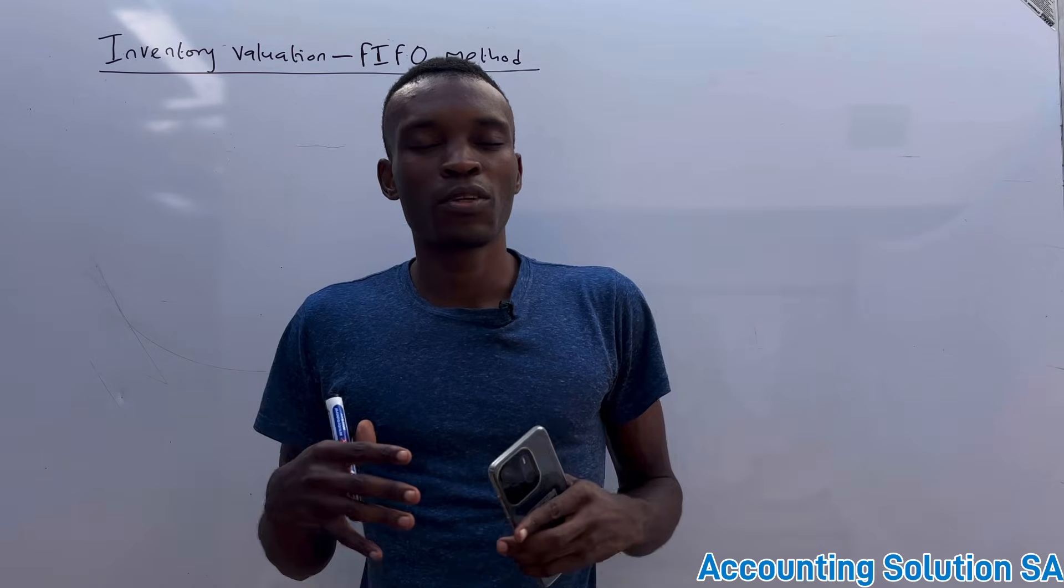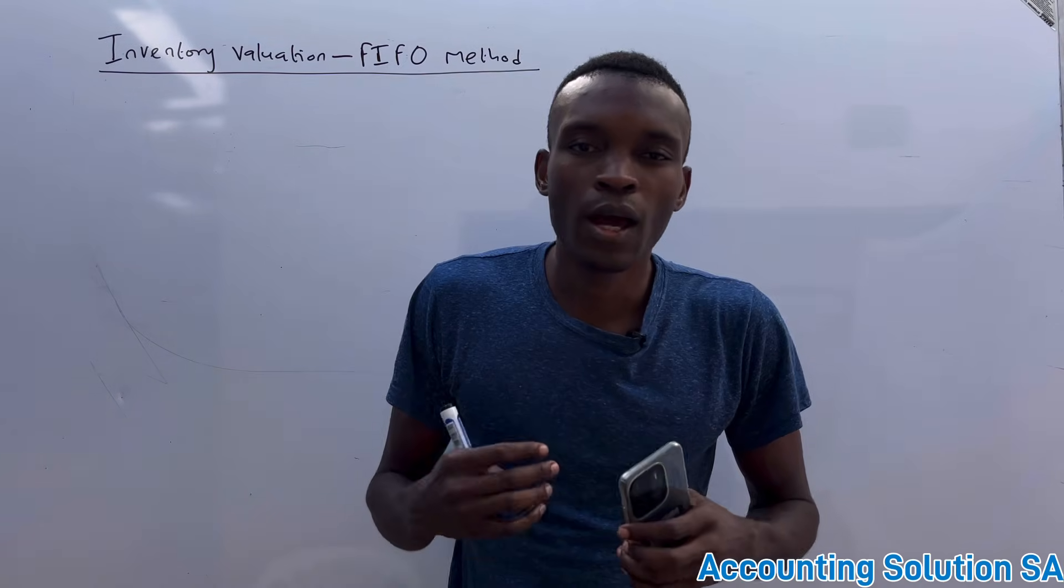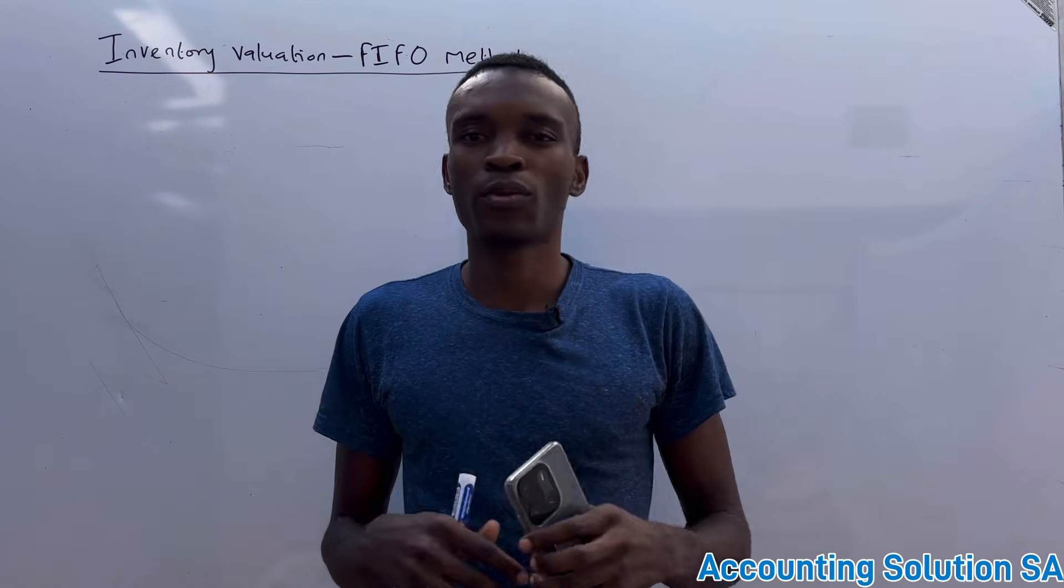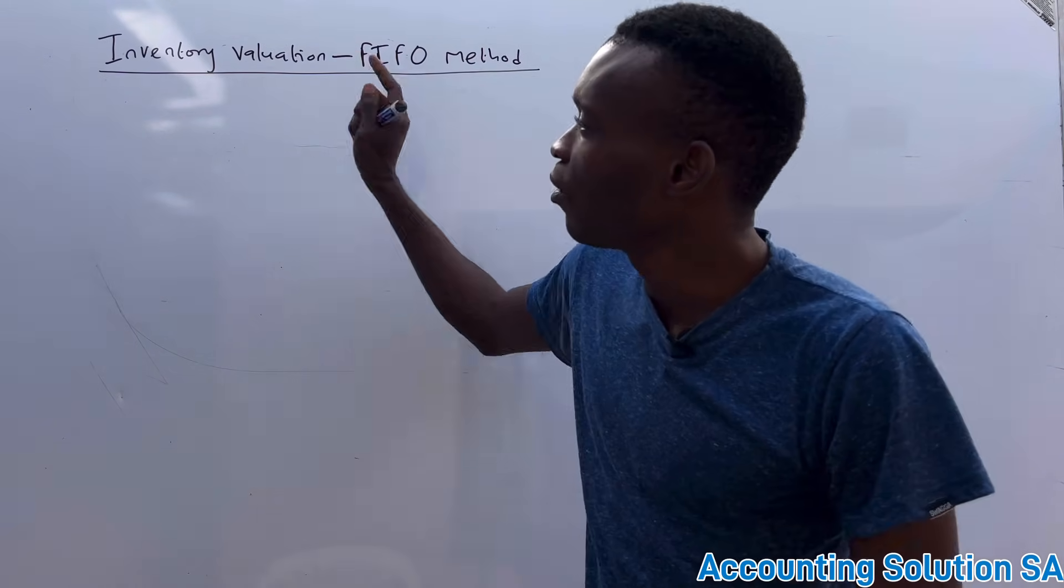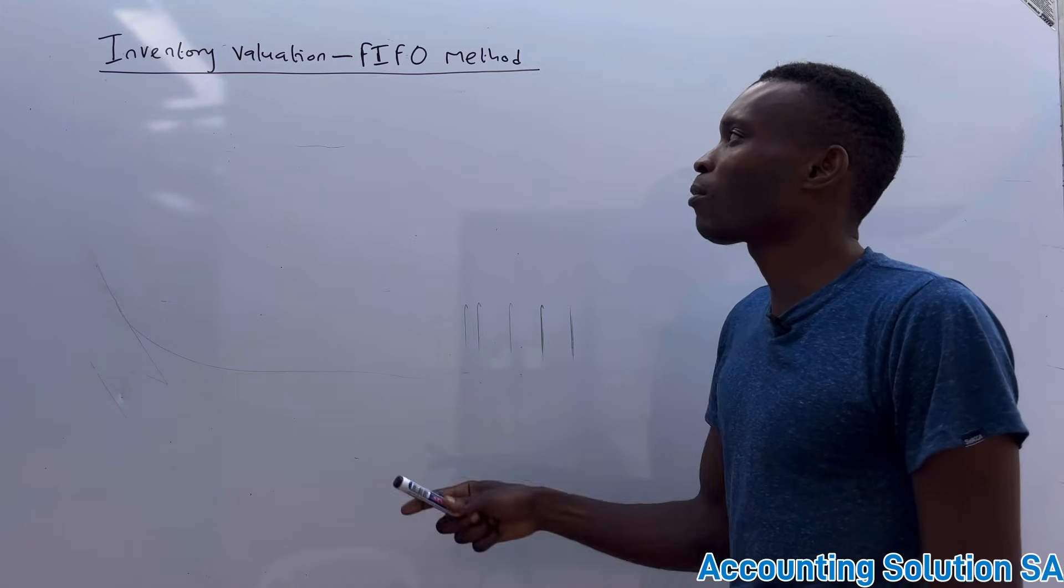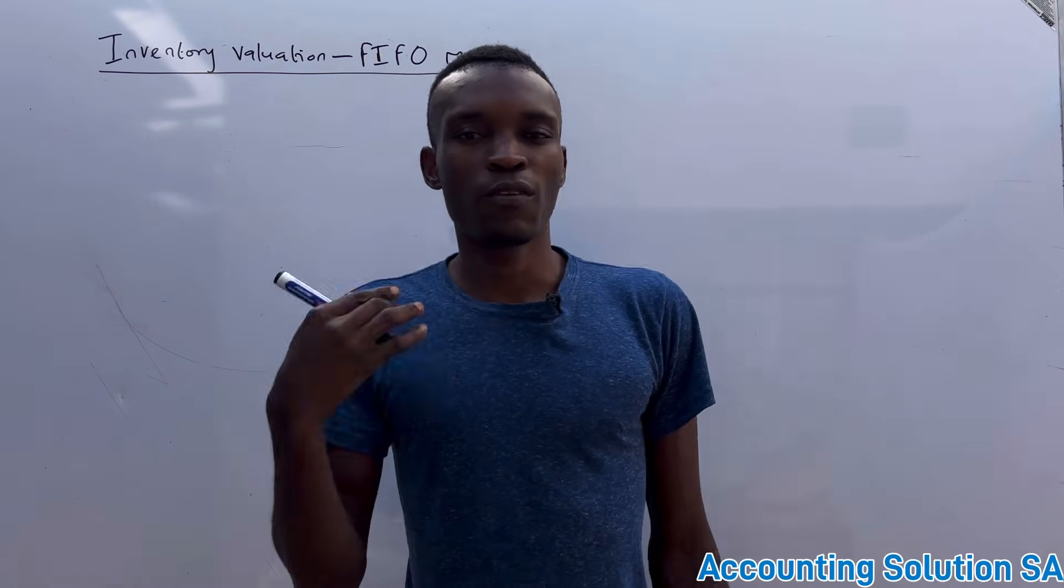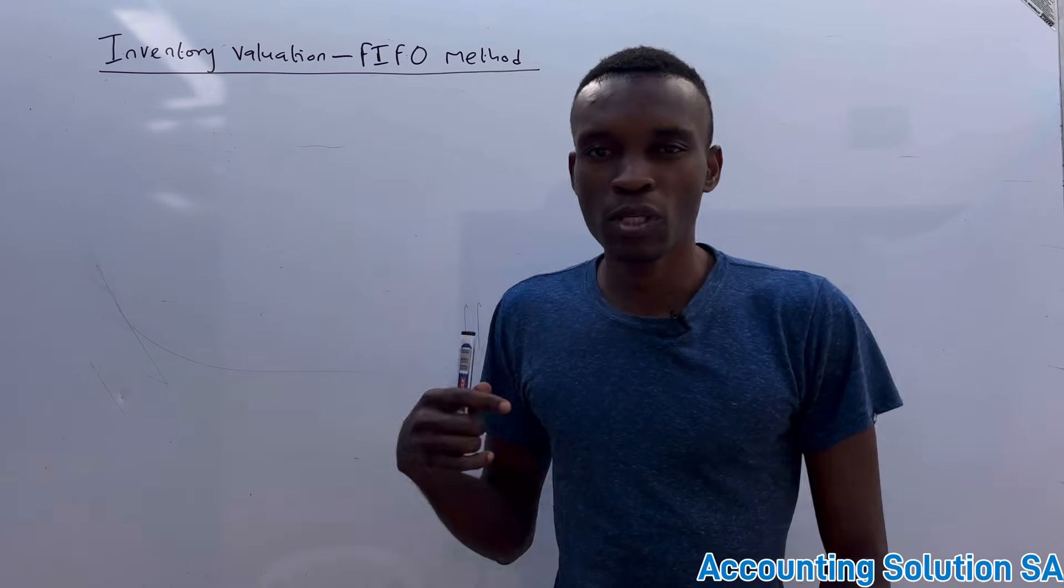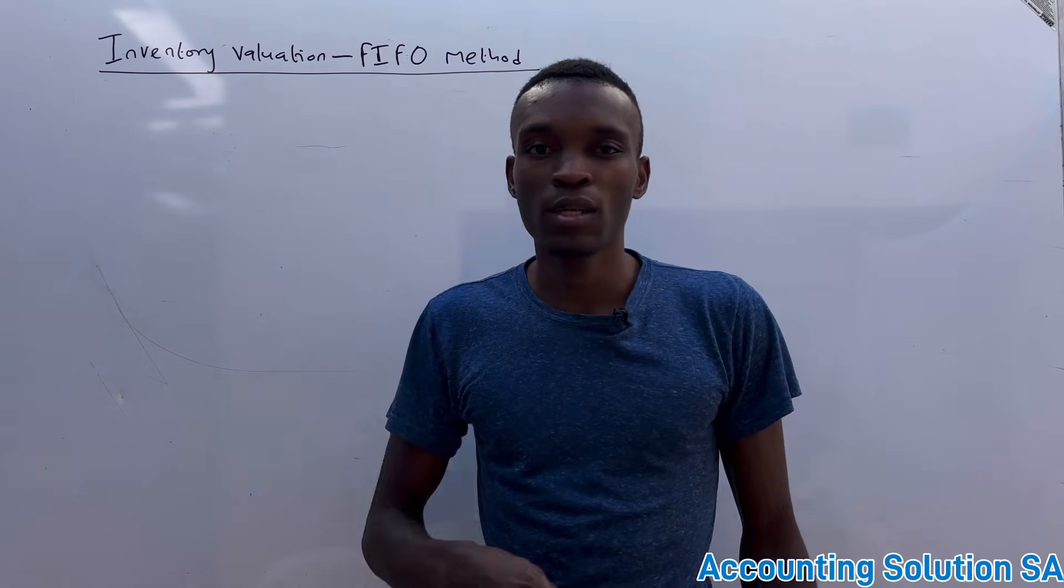In this video I'm going to explain how to calculate a First In First Out method when it comes to inventory valuation. When we talk about FIFO method, this method assumes that inventory you purchase first is the one you're going to sell first, which means when we do evaluation or calculate closing inventory, we're going to take the inventory that has been purchased last as an assumption that this is the inventory we still have on hand.